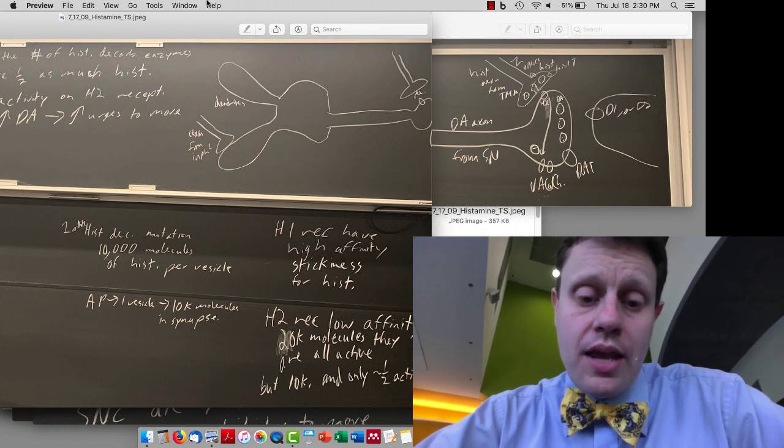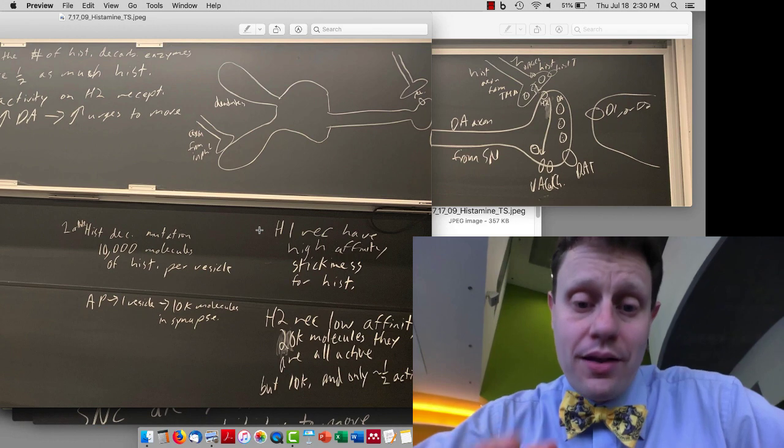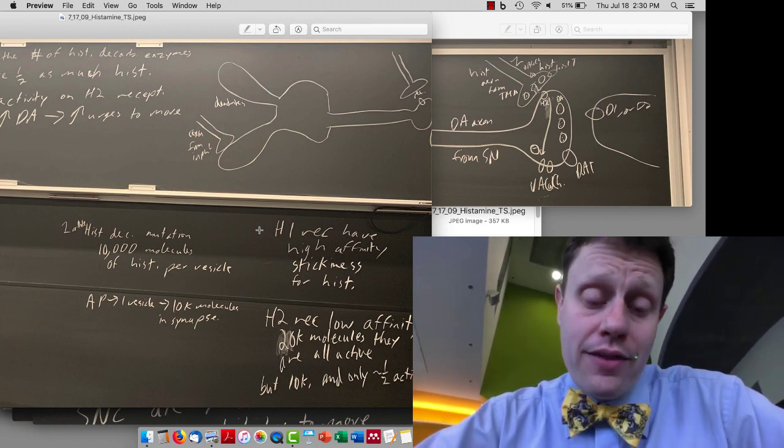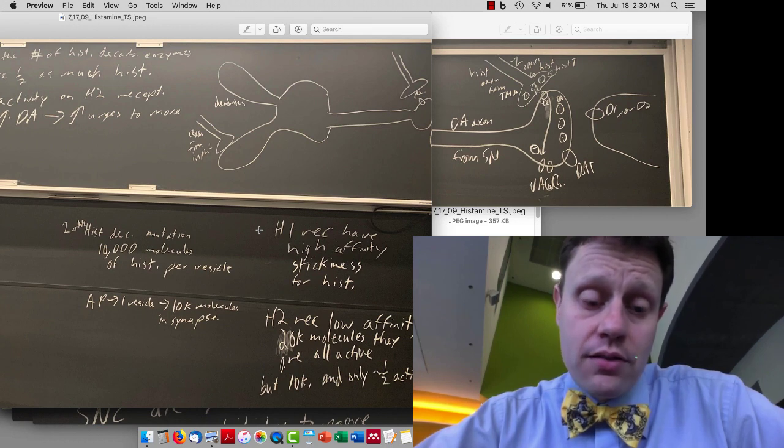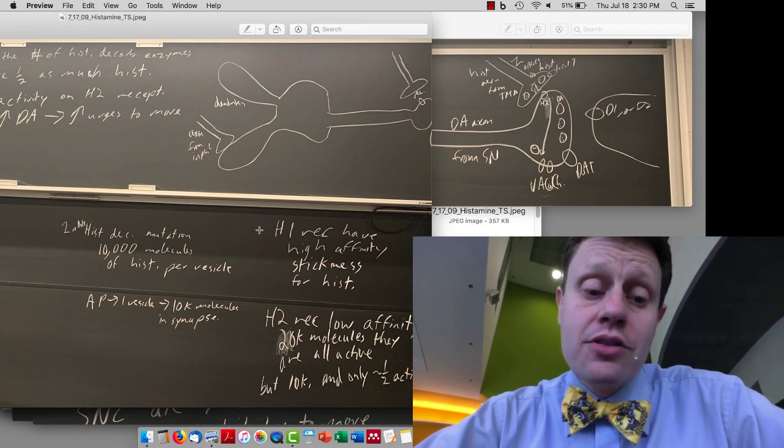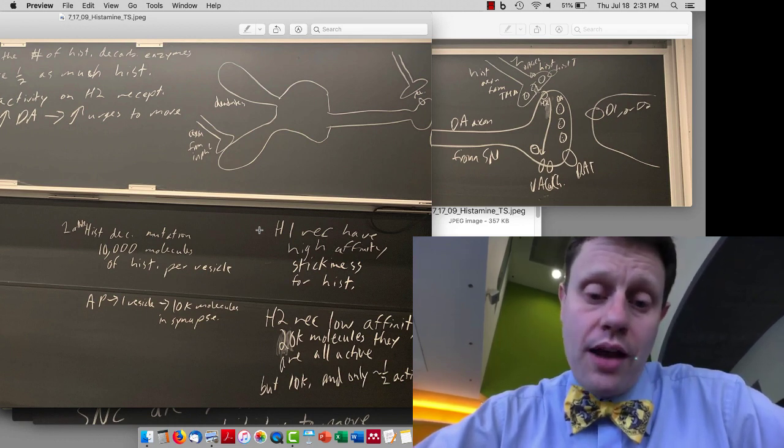So the H1 receptors have a very high affinity. They're the Beyonce receptors. They really, histamine sticks really well. And so if we cut in half the amount of histamine released out of those vesicles, the H1 receptors still are completely activated. 10,000, 20,000 molecules, it doesn't matter. All the H1 receptors are active.